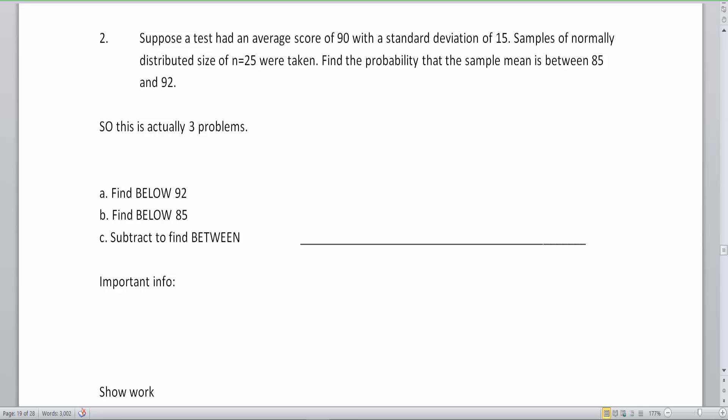Take a look at this example here. Suppose a test had an average score of 90 with a standard deviation of 15. This was similar to the previous video's problem. Samples of normally distributed size of n equals 25 were taken. Find the probability that the sample mean is between 85 and 92. So actually this is three problems.